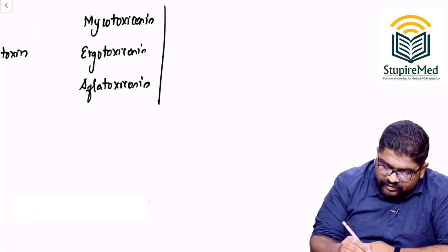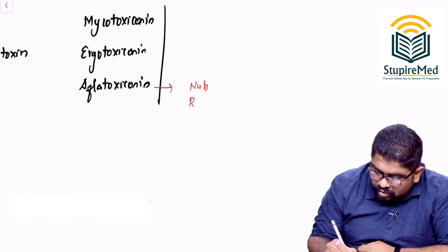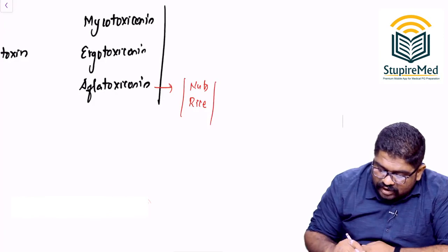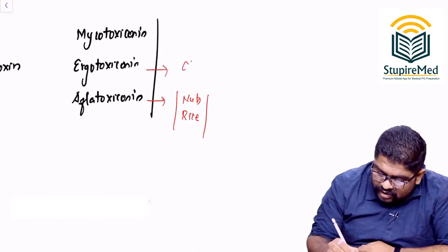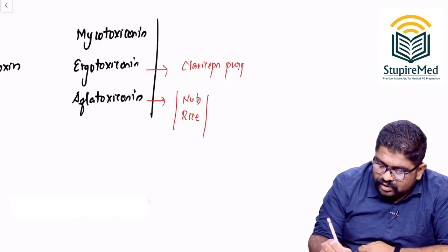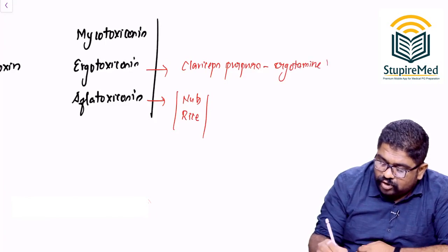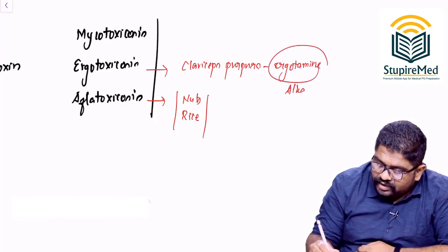Aflatoxicosis is because of Aspergillus flavus attacking nuts or rice, while Ergotoxicosis is because of Claviceps purpura, which can induce ergotamine poisoning, which can attack your liver and CNS. Ergotamine, it is alkaloidal poisoning.